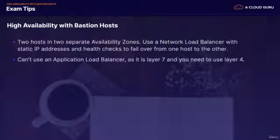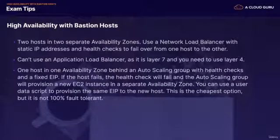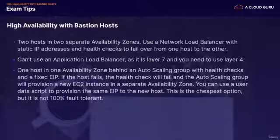Remember that you can't use an application load balancer as it's layer 7, so you need to use layer 4 — that's why we use a network load balancer. The other scenario is where you've got one host in one availability zone behind an auto-scaling group with health checks and a fixed elastic IP address. If the host fails, the health check will fail and the auto-scaling group will provision a new EC2 instance in a separate availability zone.